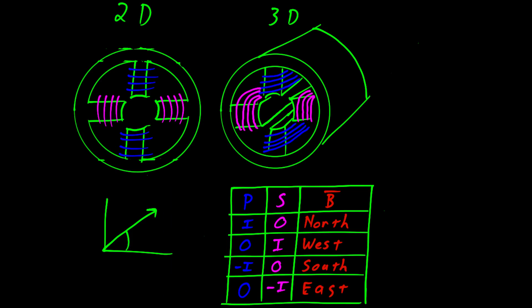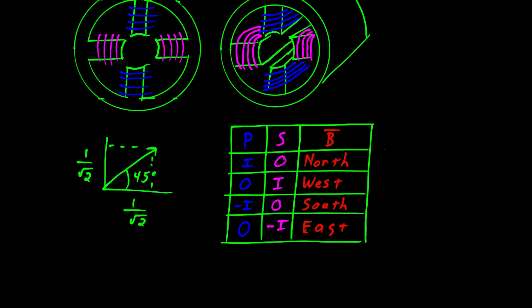For example, let's say we want to point this to 45 degrees and we want to maintain the same magnitude. All we need to do is turn on both the primary and secondary coil and set the current source to 1 over root 2. We can use the Pythagorean theorem to show that we now have a vector pointing to 45 degrees with the same amplitude as we did before.